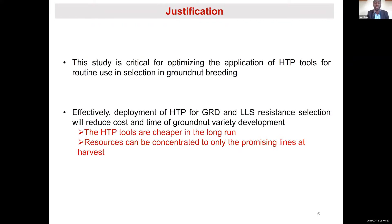This study is critical for optimizing the application of HTP tools for routine selection in groundnut breeding. Effective deployment of HTP for GRD and LLS resistance selection will reduce the cost and time of groundnut variety development. In the long run, use of HTP tools is cheaper and resources can be concentrated on promising lines at harvest.